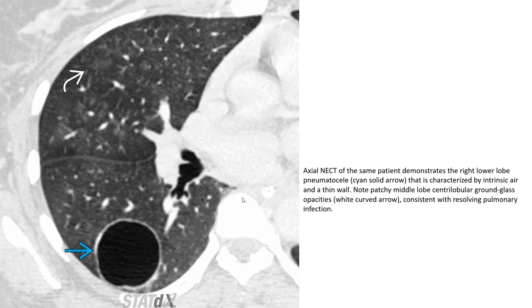On non-enhanced CT, the right lower lobe pneumatocele is characterized by a thin-walled air-filled structure. Patchy middle lobe ground-glass opacity is consistent with resolving pulmonary infection.